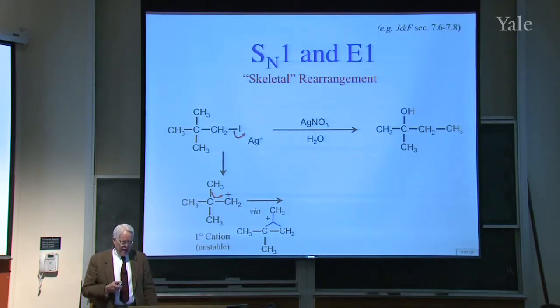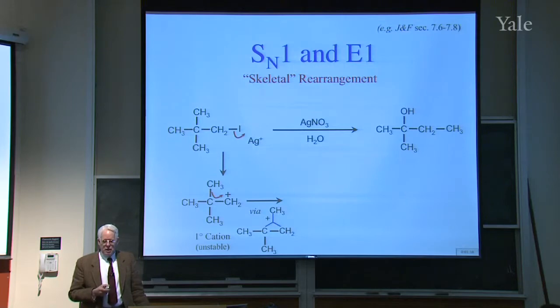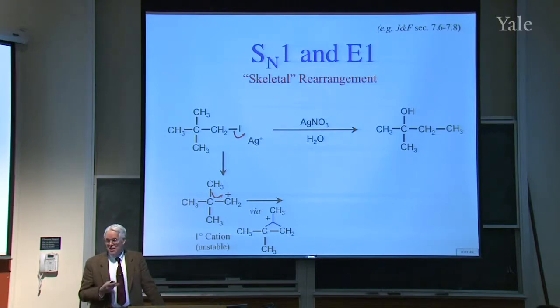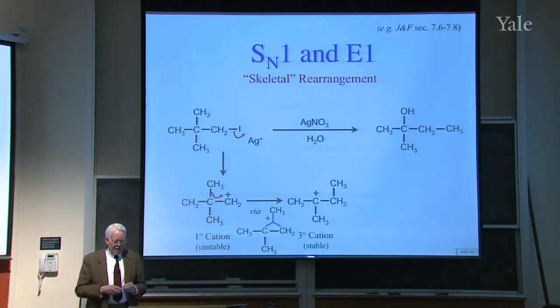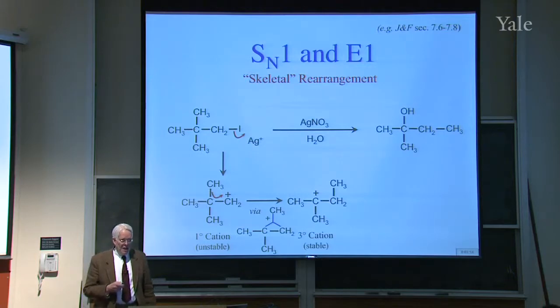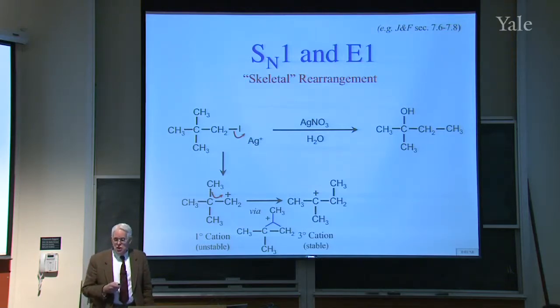First the HOMO next door is shared with the LUMO of the carbon cation. Did you ever see a structure like that, where the pair of electrons is shared with an adjacent atom? That's the Y bond, the three center, two electron bond. Then it could keep going to give the tertiary cation, much more stable.